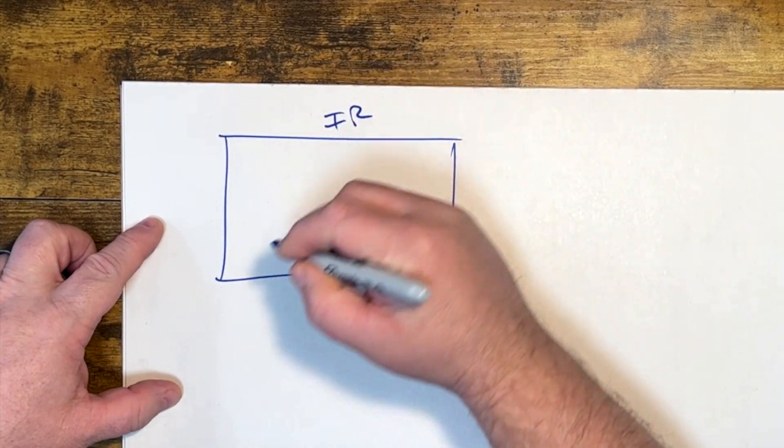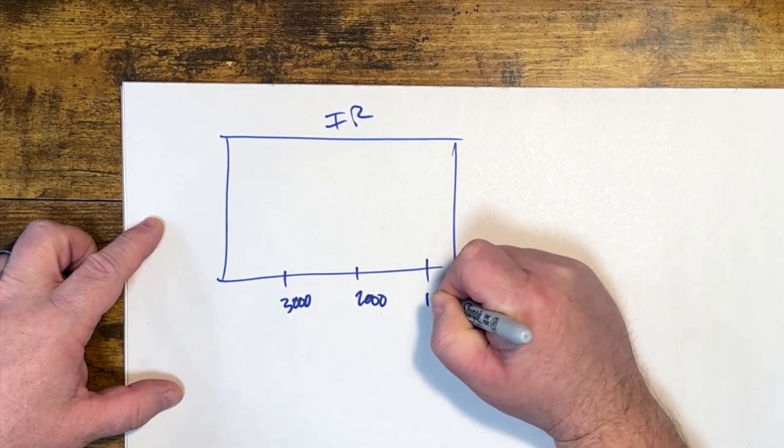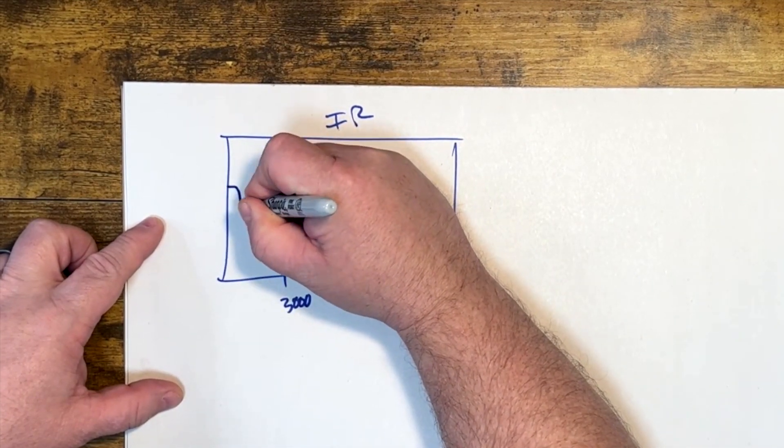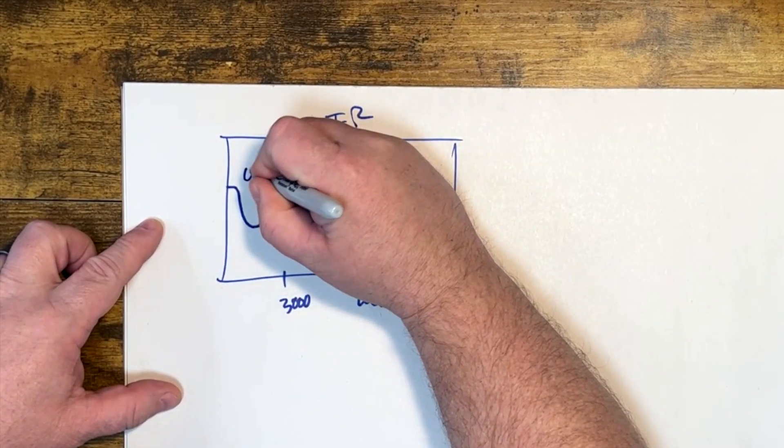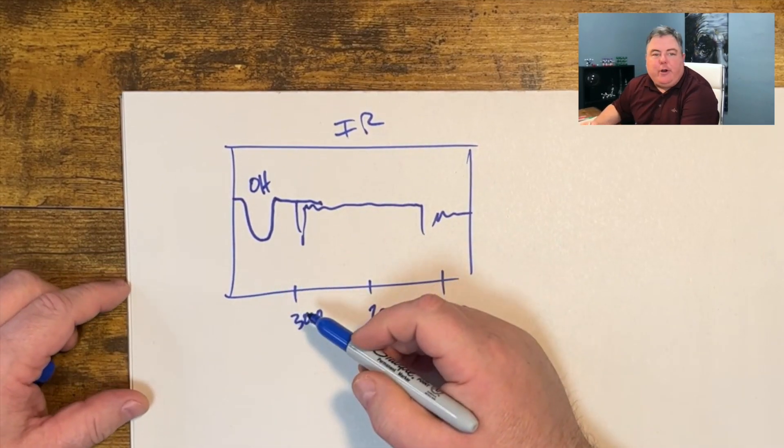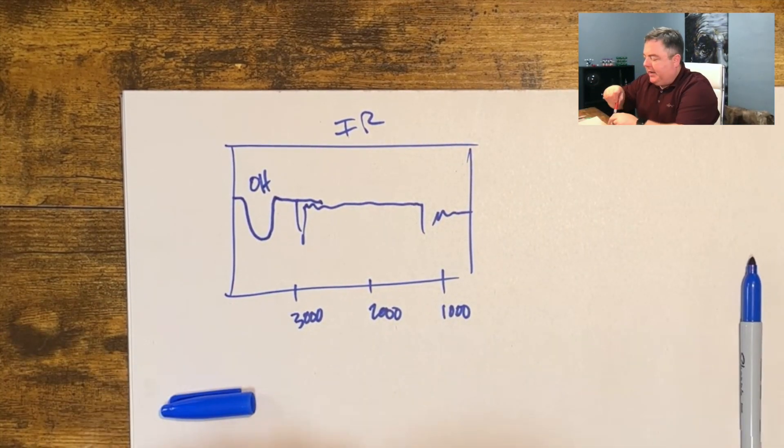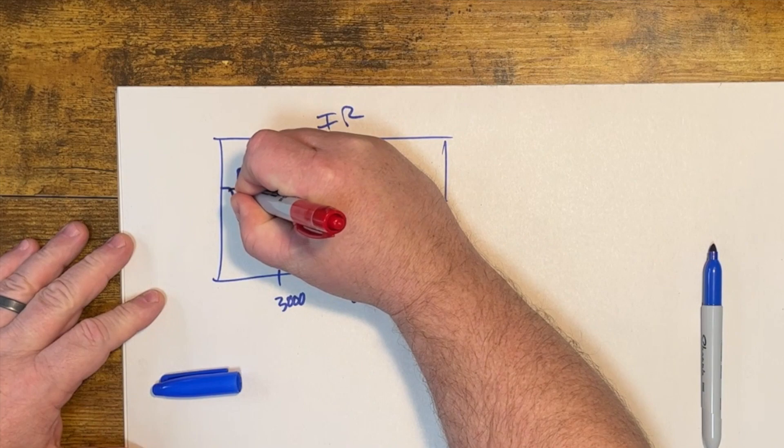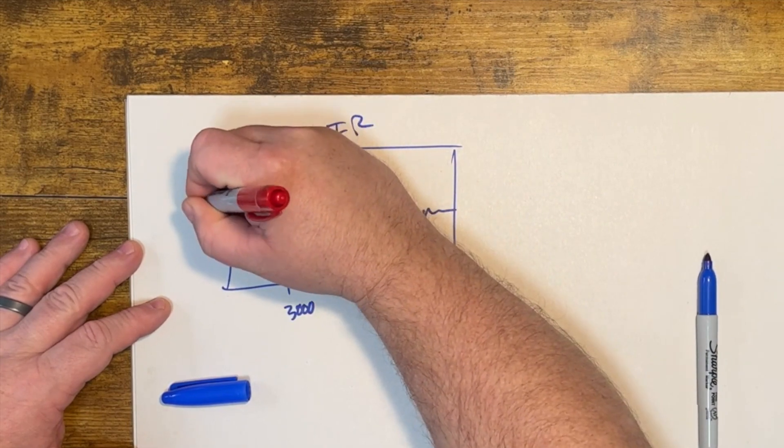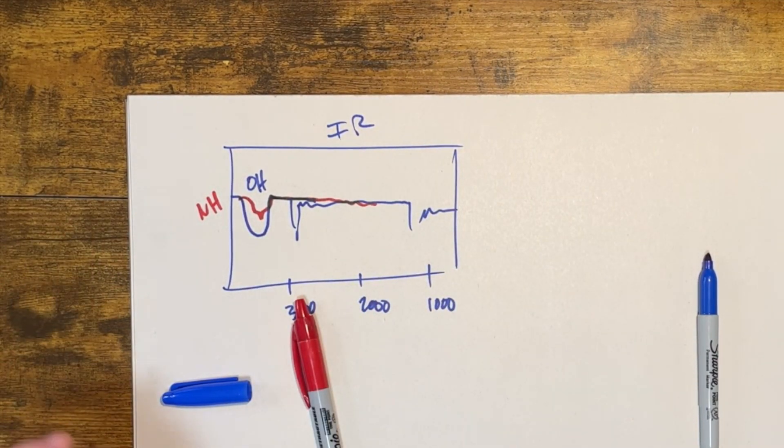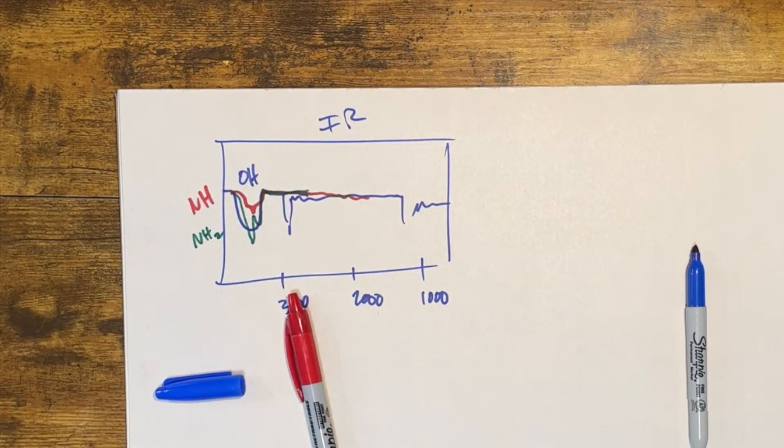Perhaps you have an infrared spectrum and 3000 is here, maybe 2000 here and 1000 here. Remember if you get a big broad peak at 3300, that's an OH bond. Or if you see a peak with a little shark tooth on it, that's an NH. If you see a double peak out here somewhere, that might be an NH2, a double hump peak.